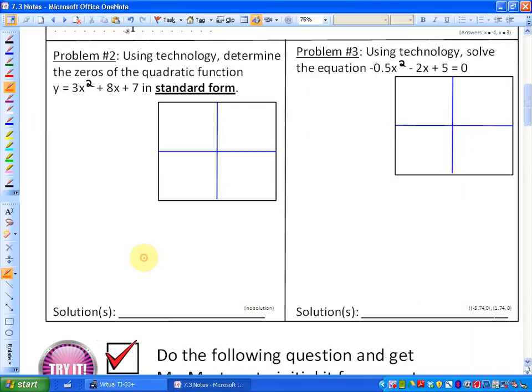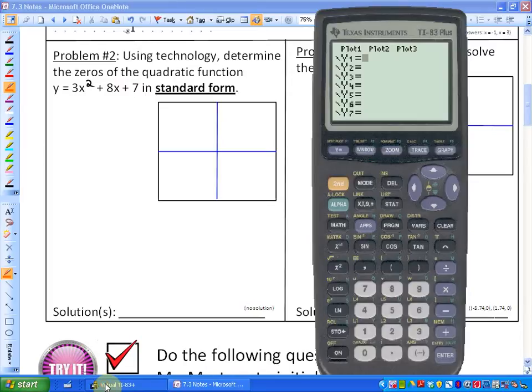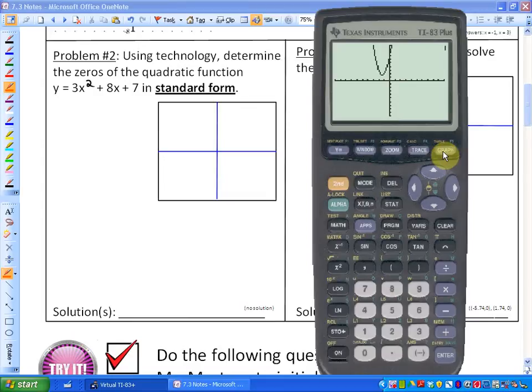So this first question says, using technology, so a graphing calculator, determine the zeros of the quadratic function in standard form. So we're given the quadratic function. The zeros again means give me the values of x that makes the values of y equal to zero. So if we graph this function, which we've looked at in previous lessons, I'm just going to graph it quickly: y = 3x² + 8x + 7. And I'm just going to hit graph.